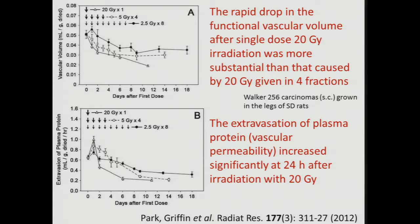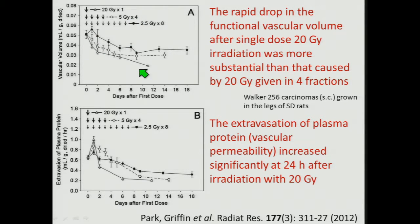In an earlier paper switching back to the rat model, they compared the effect of a large single dose versus 5 gray × 4 or 2.5 gray × 8 for vascular volume using a radioisotope, and evasion of plasma protein using a radioisotope and vascular volume with histology. The large single dose has a much more marked reduction in vascular volume and a greater release of plasma from the damaged blood vessels — clearly a more dramatic effect than even 5 gray × 4 or a standard conventional 2.5 gray × 8.